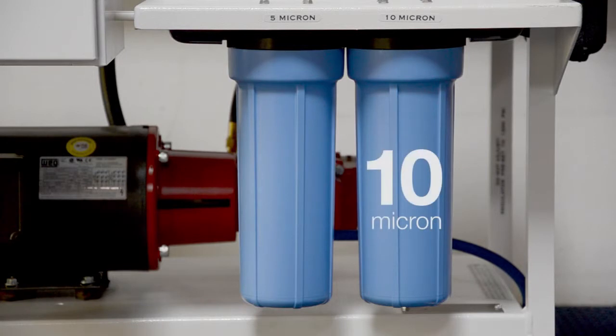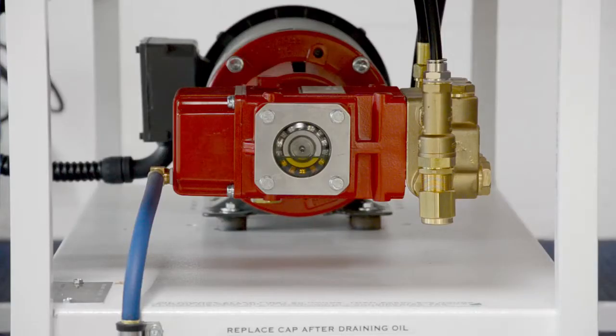A 10 micron carbon block and 5 micron sediment filter operate as a final guard against debris entering the mist system. The pump head is an industrial-quality triplex piston unit designed for long operation and quiet service.